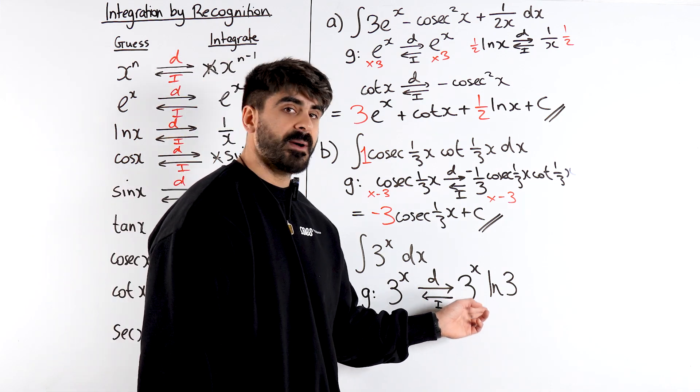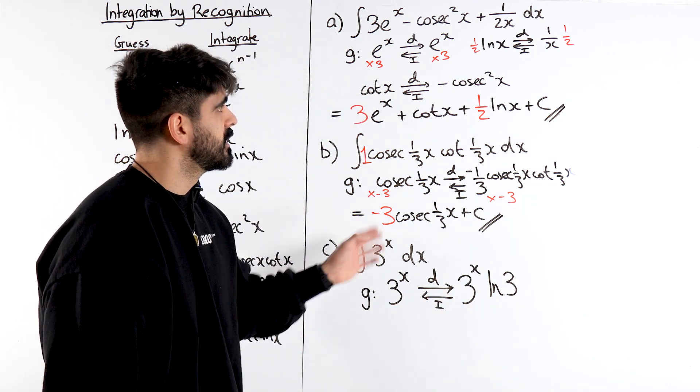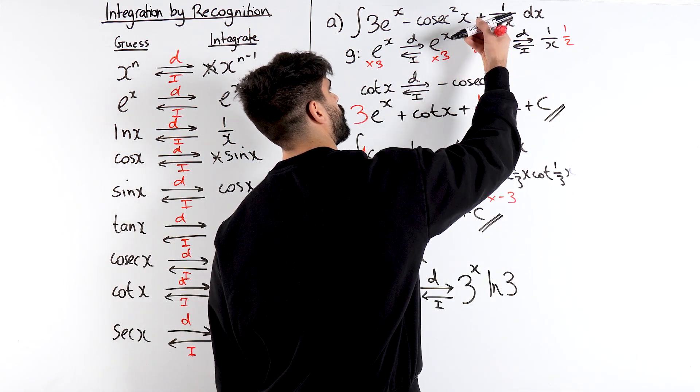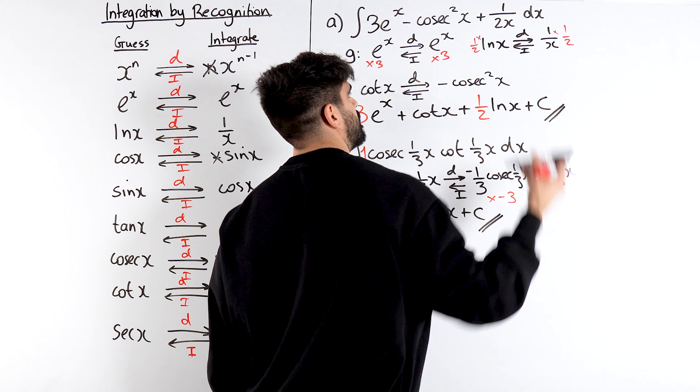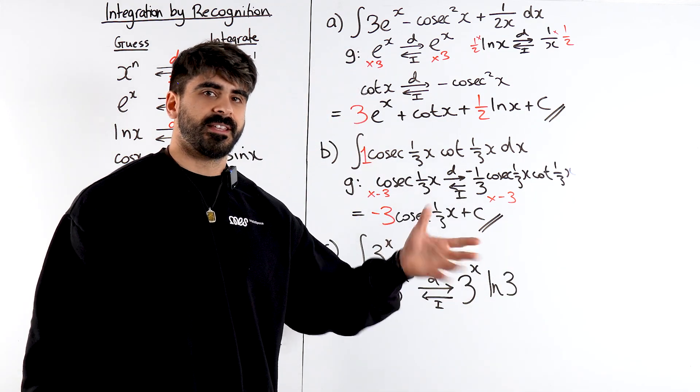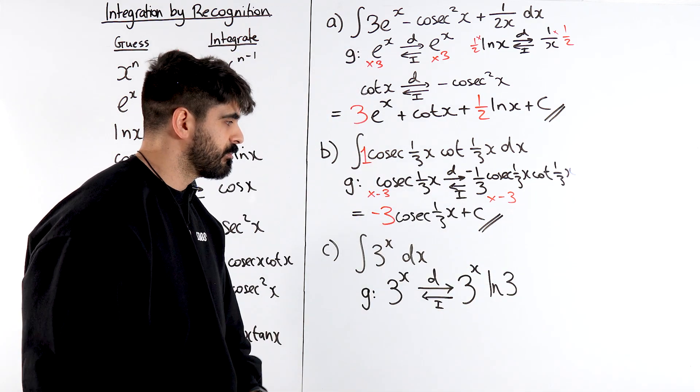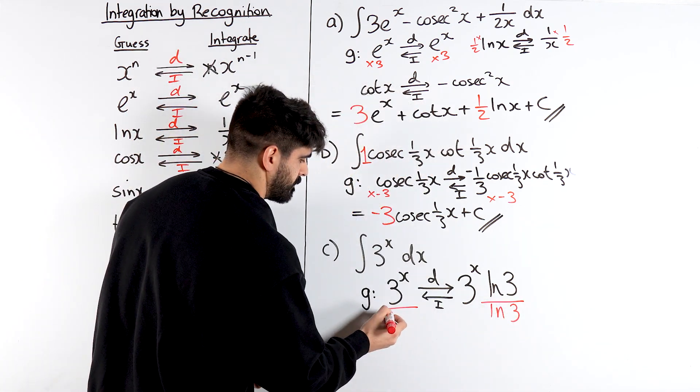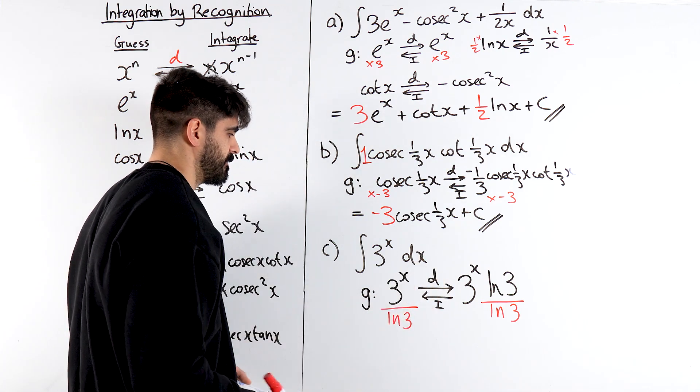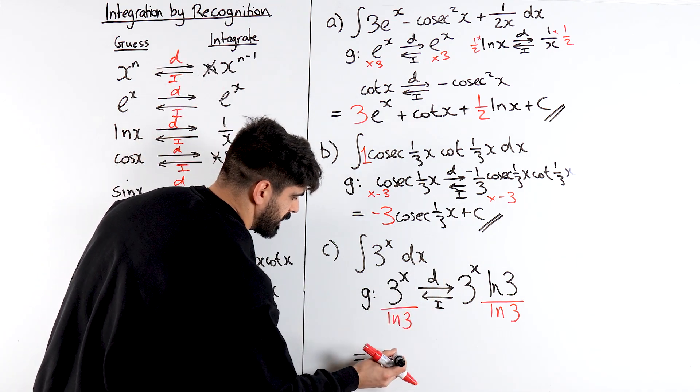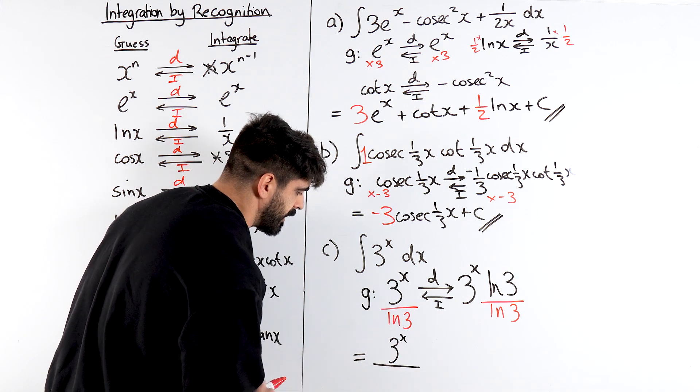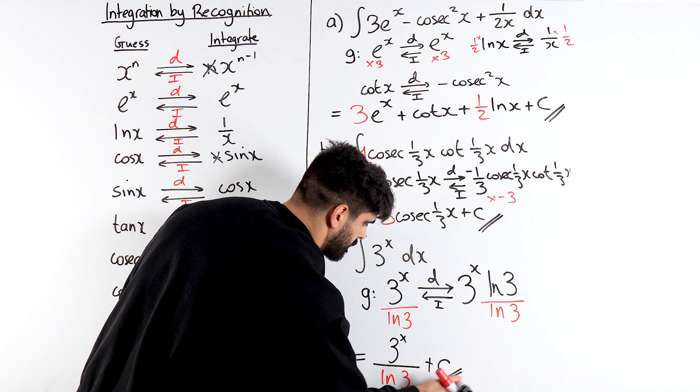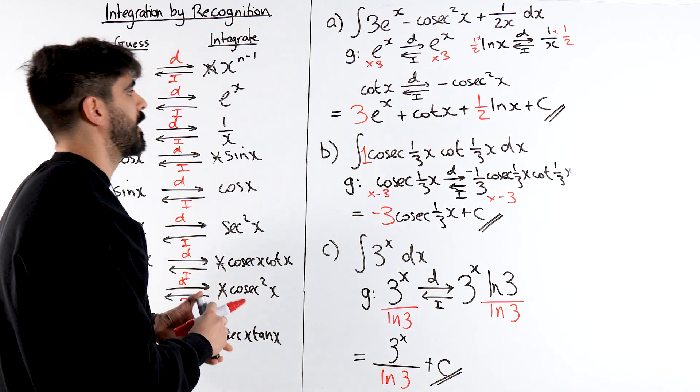But we didn't want to integrate 3 to the power of x ln 3. We need to get rid of the ln 3. You would times both sides by 1 over ln 3 to get rid of it. Or you could divide by ln 3. In general I like to write multiplication when doing all of these. But when it comes to these ones I actually like to write divide. You guys can write times by 1 over ln 3. You just do whichever one you prefer. So we're going to divide both sides by ln 3. And there's your answer. So it's actually very simple. So equals 3 to the power of x divided by ln 3. Then we have plus c. And that is integration by recognition.